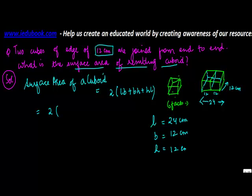Therefore, the height will remain as 12 centimeters. So you get the surface area of the cuboid as 2 times: length into breadth (24 into 12) plus breadth into height (12 into 12) plus height into length (12 into 24).